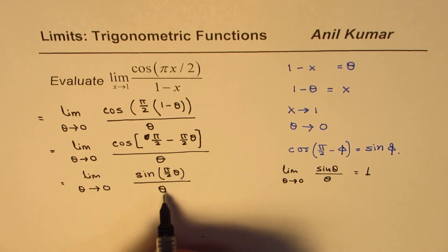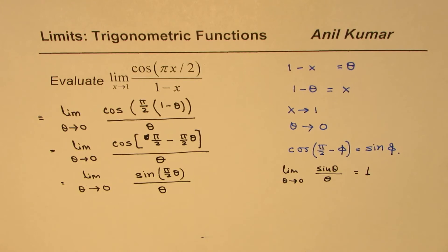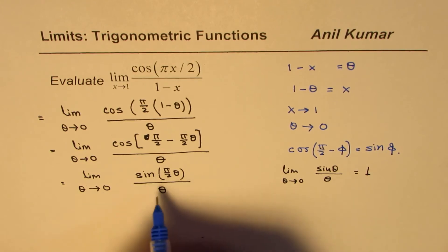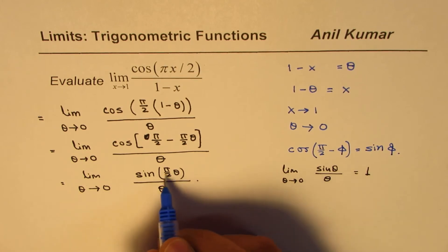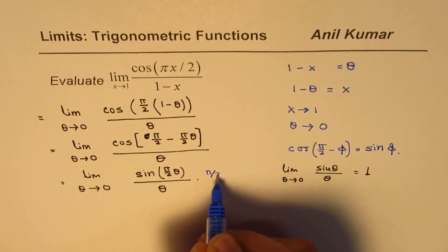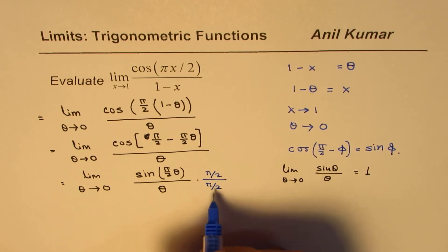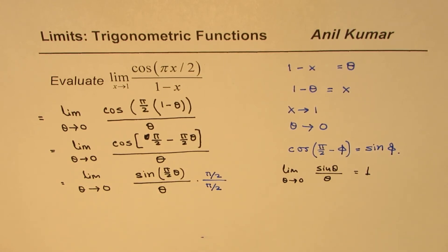So to get π/2 in the denominator, what we can do at this stage is multiply and divide by π/2. So we could multiply by π/2 in the numerator and π/2 in the denominator.